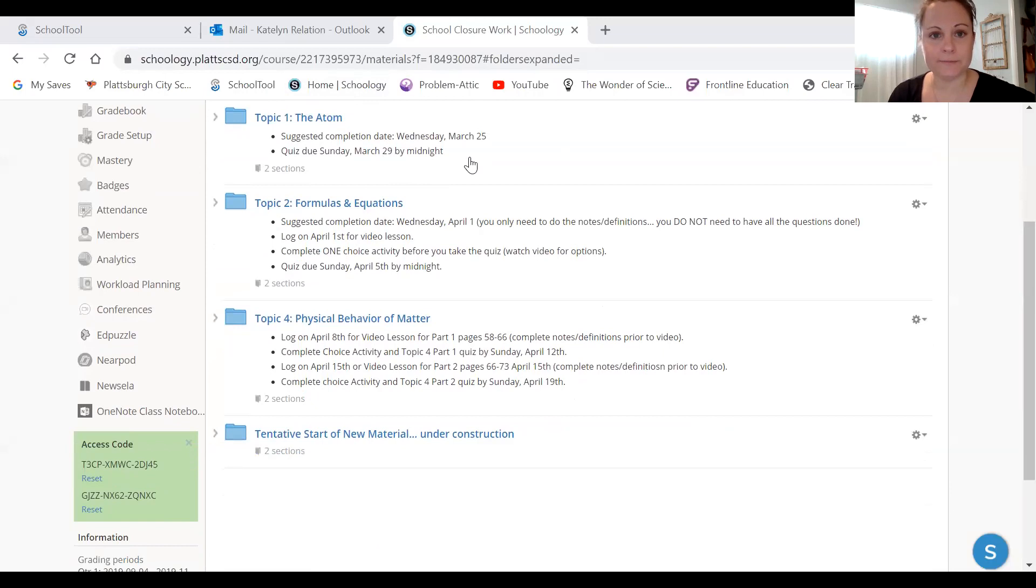Topic one is already done. And topic two is what we're doing now. So you have already done what you need to do. You've logged on today, April 1st, to watch the video lesson. You're going to complete one of those three choice activities before you take the quiz. And you're going to complete the topic two quiz by this Sunday, April 5th at midnight. We're going to skip topic three. So what's coming up next, all of those due dates are here in the topic four folder. So after Sunday, the next thing you'll have to do is to just log on April 8th for the next video lesson on just the first half of topic four. Complete any notes or definitions prior to logging into that video. I'm going to then give you another choice activity and another quiz for that Sunday. And then we'll move on to the second half of topic four.